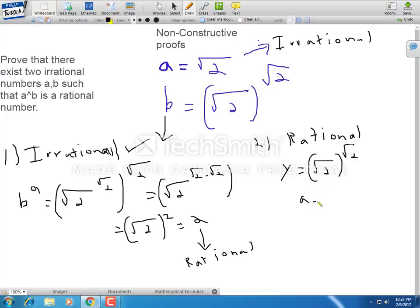So now we have a equals root 2, b equals root 2, and y equals a raised to b. Here a is irrational, b is irrational, and by assumption in case 2, y is rational.